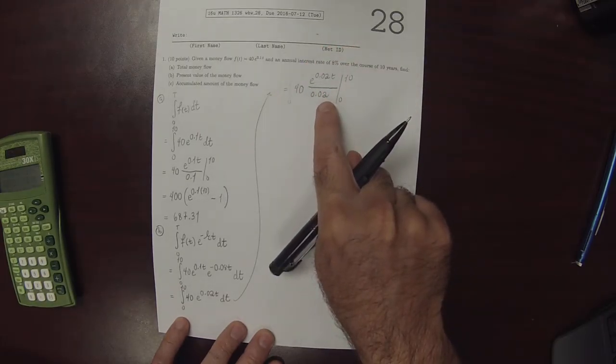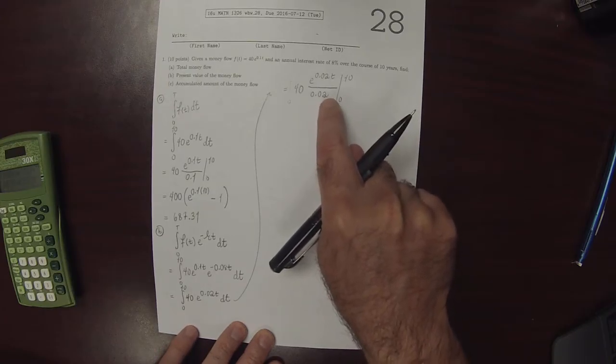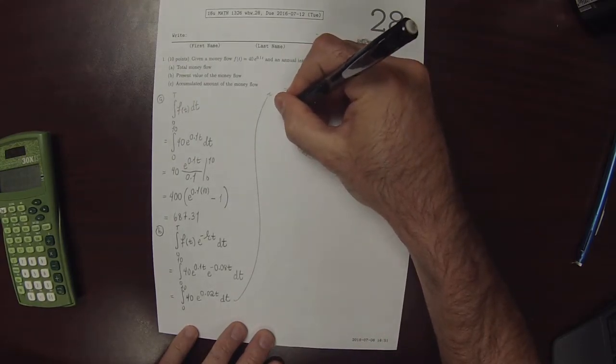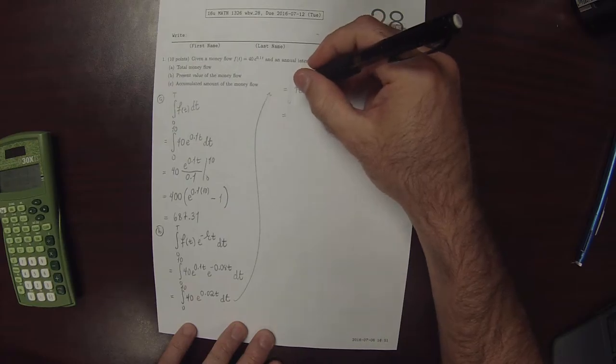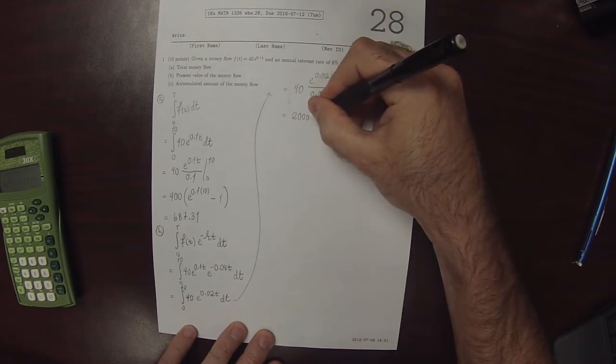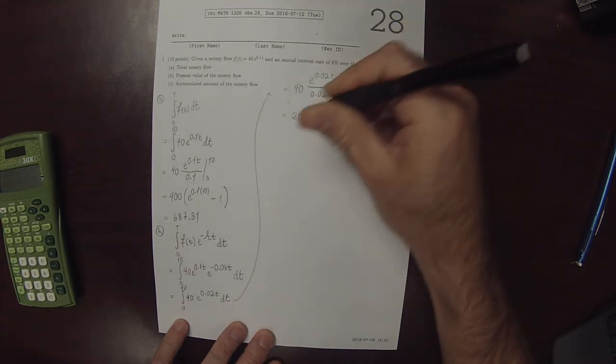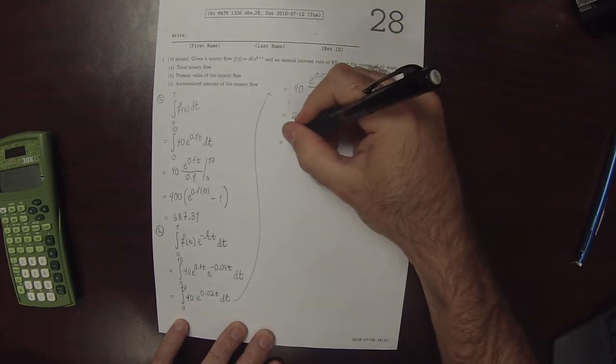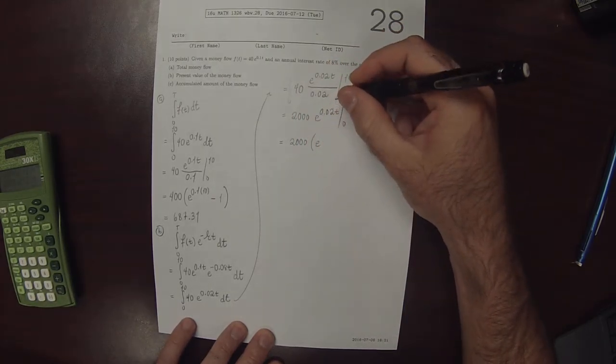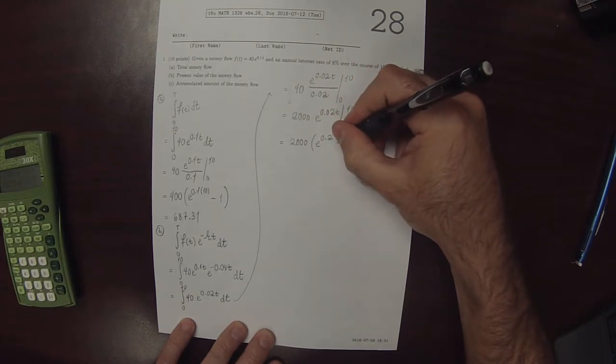So division by 0.02, that is 1 out of 50, that's the same as division by 1 over 50, is the same as multiplication by 50. So that would be 2,000 exponential 0.02 T from 0 to 10. So that's 2,000, and then exponential of 0.02 minus 1.